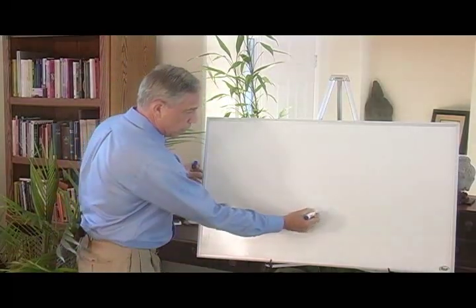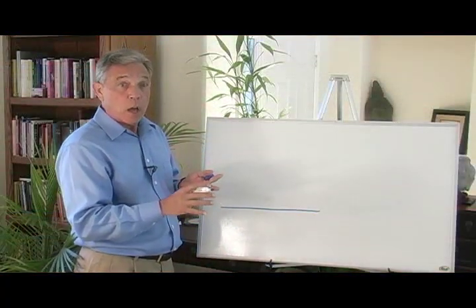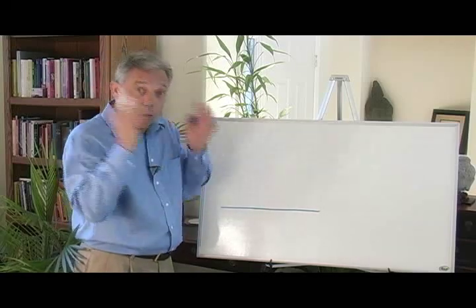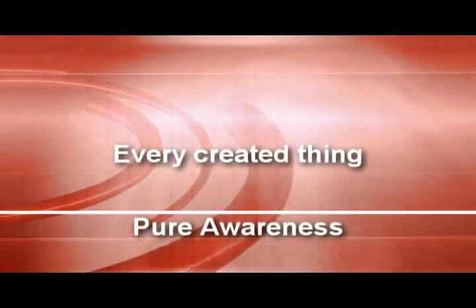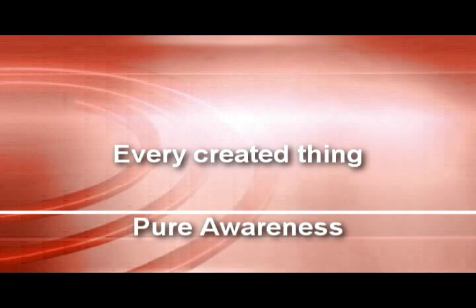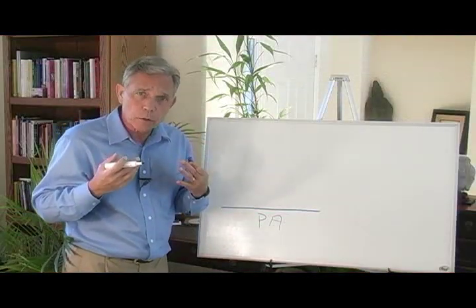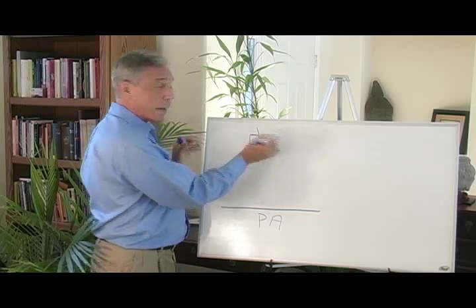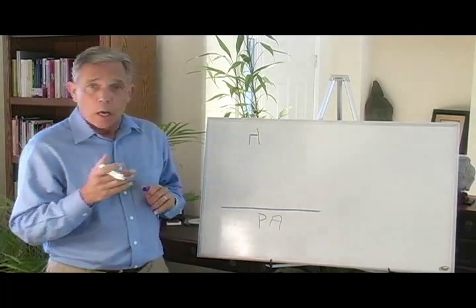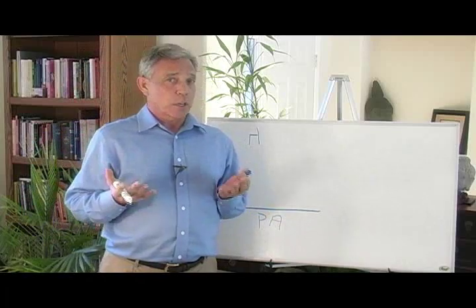I'm going to draw a line right along here on the bottom. Now, above this line is every created thing in the world. That is stars and cars and jelly jars and thoughts and emotions, all of that up here. Down here, we have pure awareness. And we won't deal with this too much because I want to focus on the things that our senses can pick up and that we can understand. If you're sitting in a chair, I'm going to draw a chair right up here. That's a chair.